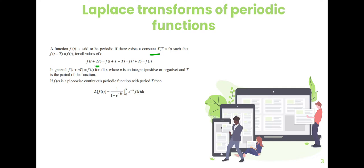For example, f(t + 2T) can be split as f(t + T + T). Using this property, we get f(t + T) equal to f(t). In general, f(t + nT) is equal to f(t), where n is an integer.